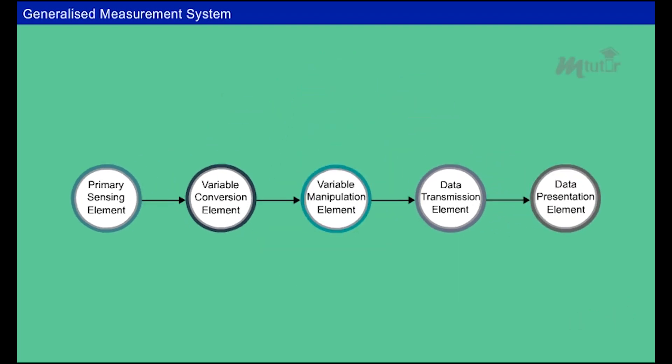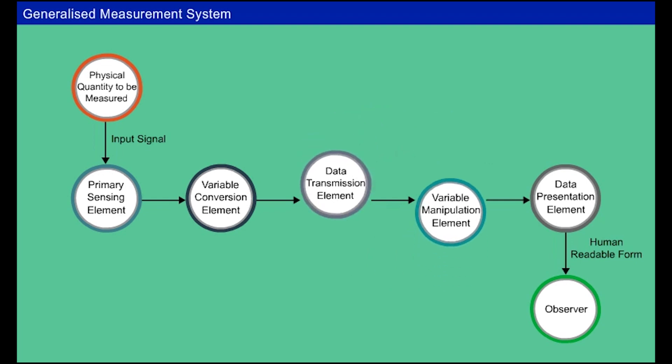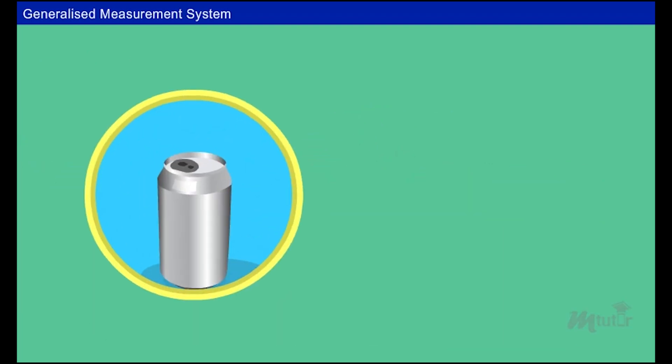These elements are arranged in such a way that the primary sensing element makes contact with the entity to be measured, and the data presentation element gives information to the observer about the quantity measured. It is not necessary that the manipulation element must succeed the conversion element. It can be placed as per the requirement. Let us understand better.